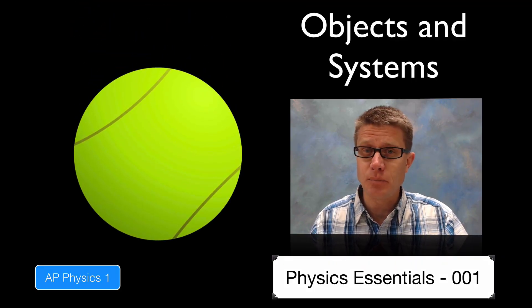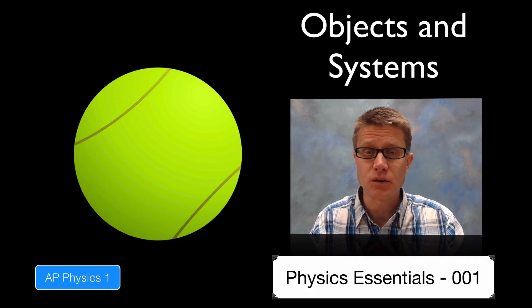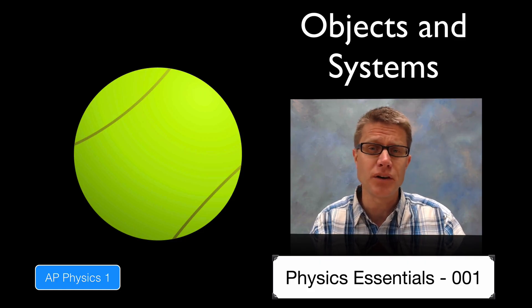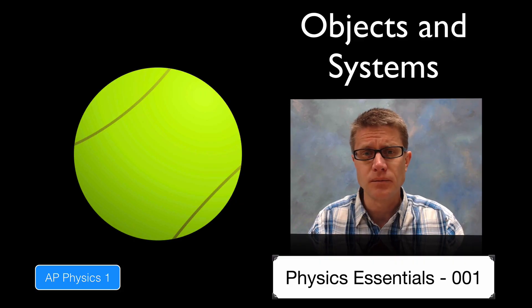If we were to take something like a tennis ball, could you figure out if it is an object or a system? The right answer is yes. It is both an object and a system. And it depends on what question we are trying to answer.